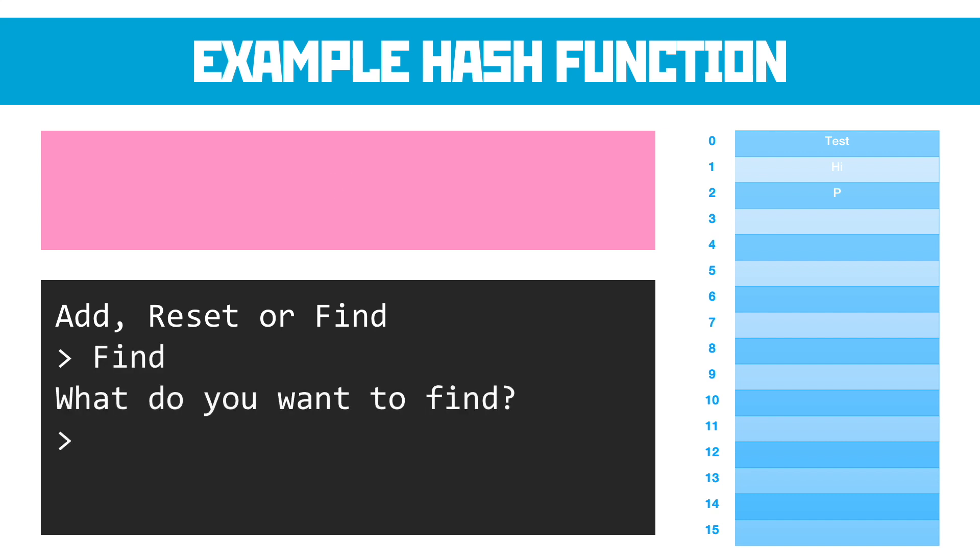And the search function will have similar logic built into it to that same search process. If I'm searching and I'm looking for high, I would work out those values and work out that it's index 1 and look for it. If I'm searching for Mr. M, I'm going to work out the hash function of that, look in that location, and if it's blank, I know there's nothing there.